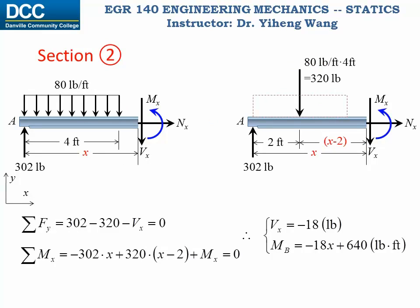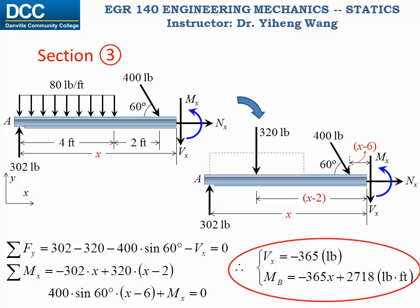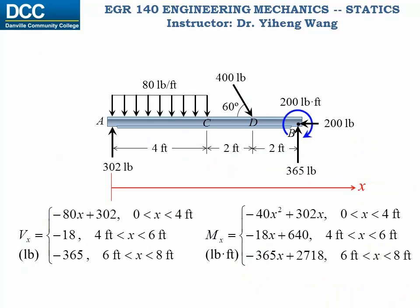We do the same thing for section 2. Keep in mind we are still using the entire left segment, so the length is still x. Be careful when finding the moment arm for the concentrated force. We solve for two more functions that apply to the second part of the member. Then we do it one more time for section 3 — again the segment has length x, and again be careful with the moment arms. We solve for the last set of functions for the third part. After summarizing the results, we can see that both the shear force and bending moment functions are piecewise functions, each made up of three different equations that apply to different parts of the member.